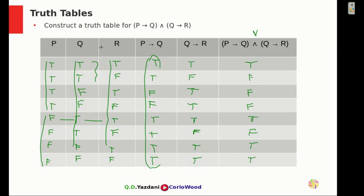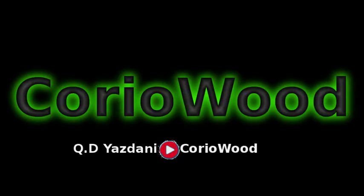That's how we construct a truth table for P implies Q and Q implies R. In the next video we're going to see what is logically equivalent in the truth table. If you have any questions or comments, leave them in the comment box. I'll see you guys in the next video — bye!